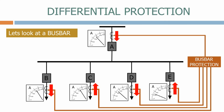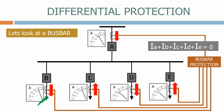Let's now apply a fault on one of the feeders. The current magnitude on the incomer will now increase substantially as it feeds the fault. If it's a fully connected system, the direction of the current on some feeders may also change as they back-feed power into the system, depending on the configuration of the network. Regardless of the direction and magnitude of these currents, the sum of the currents will still be zero and the busbar protection system will not operate. Let's now remove the fault.